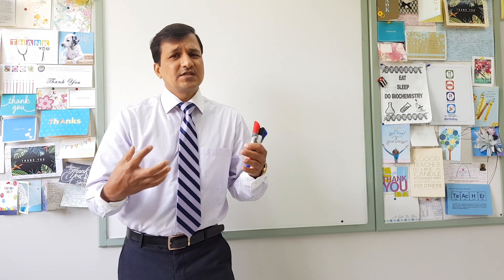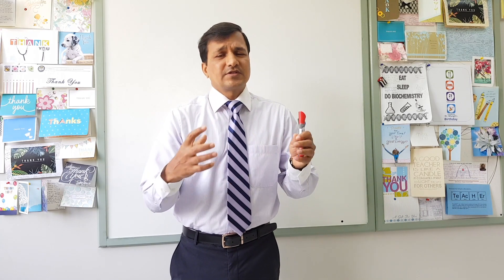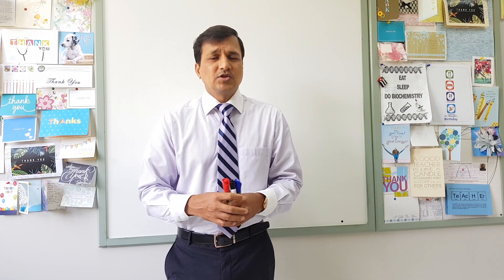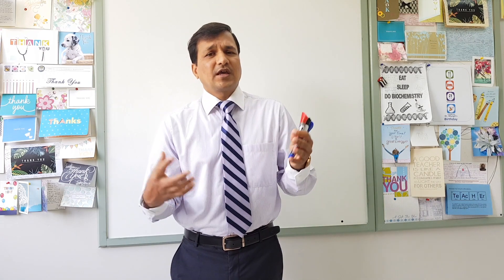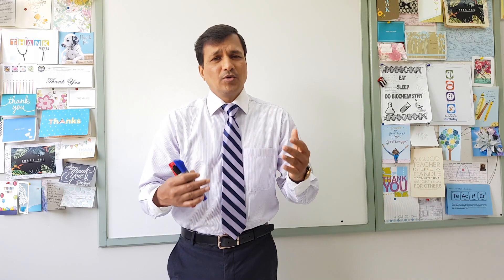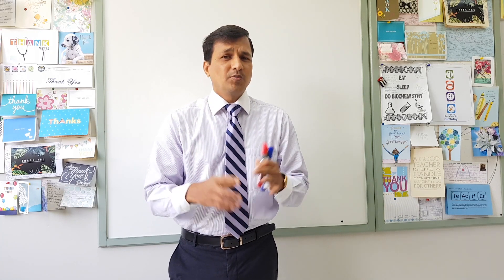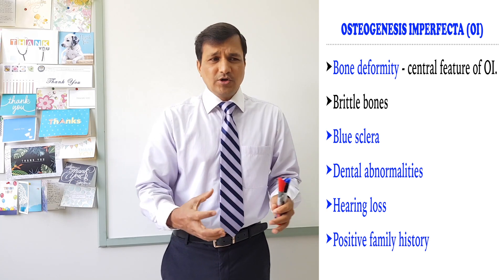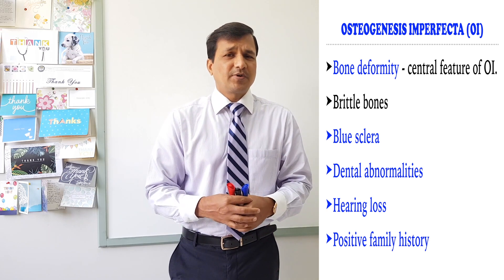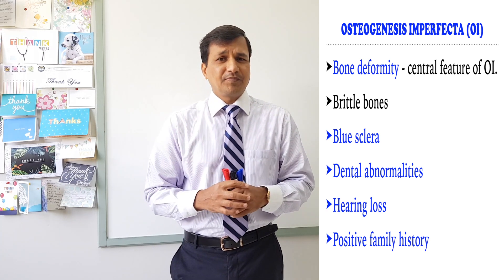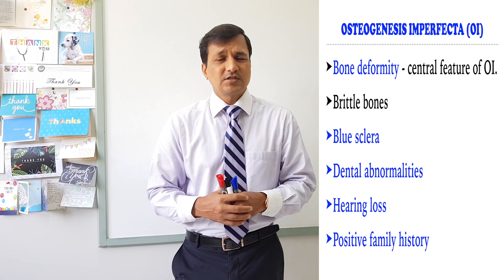Now let's look at the signs and symptoms of osteogenesis imperfecta. The most common sign seen in all types is bone deformity, which can be severe or even lethal depending on the type. A brittle or weak bone is formed, making bone deformity the central feature. Along with bone deformity, types 1, 2, and 3 osteogenesis imperfecta will show blue sclera, which is an important sign.